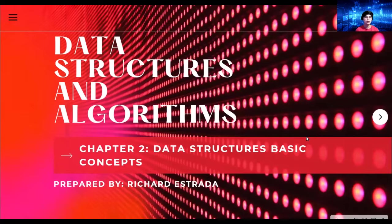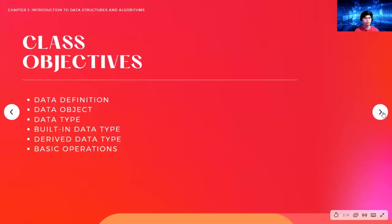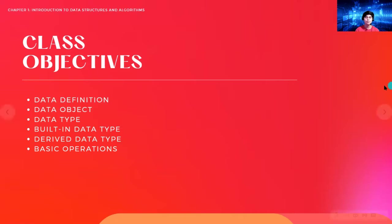Hey guys, welcome to Chapter 2 for Data Structures and Algorithms. For this chapter, we will be discussing the basic concepts of data structures. Our class objectives will be defining what data is, what a data object is, what data types are, the different categories of data types — built-in and derived — and the different basic operations in data structures.